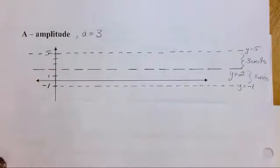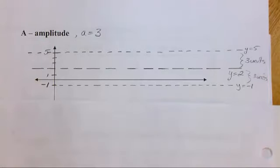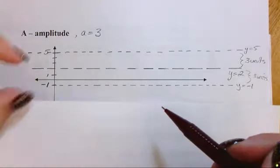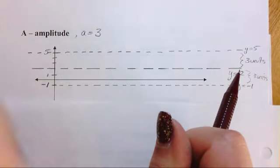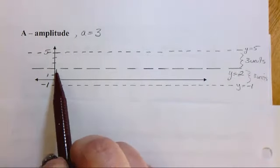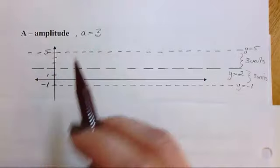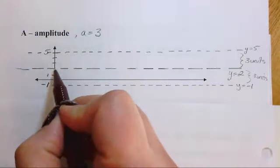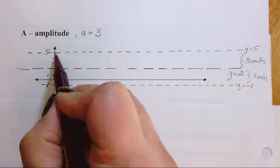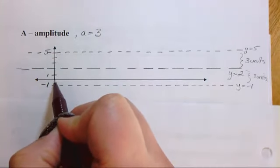Our next one here, this is our amplitude. So our amplitude refers to how our sine graph is stretching like this. So instead of stretching just one, it's going to be stretching three. So that's from this midline right here, it's going to go up three units from there. And then it's going to go down three units from there.